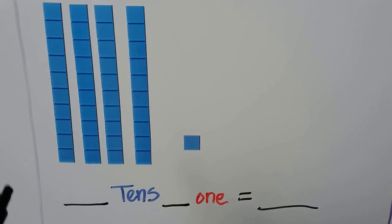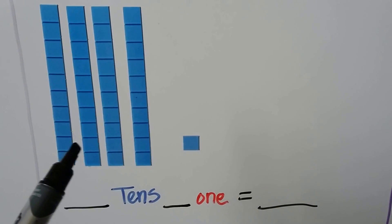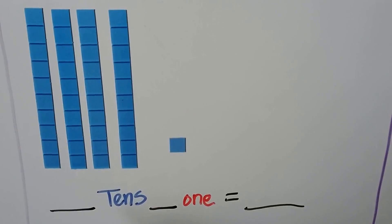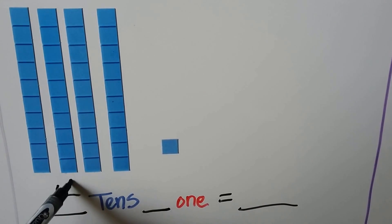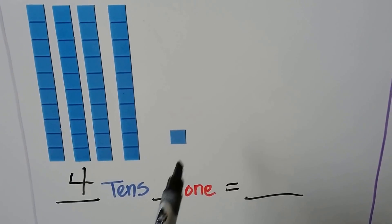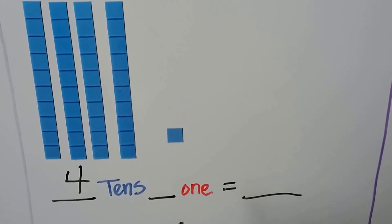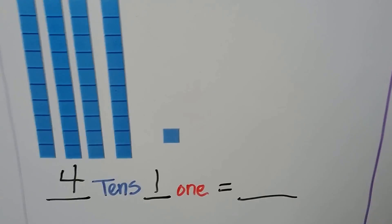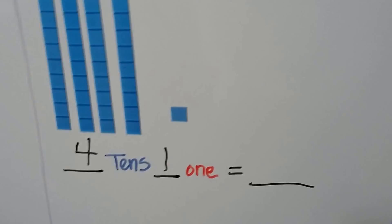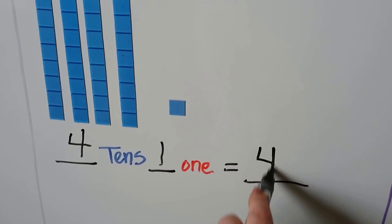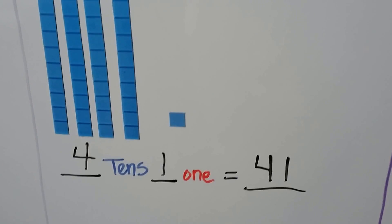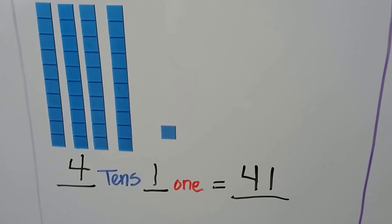How many tens are here? One, two, three, four tens. And we have just one. We can write the number. There's a four in the tens place and a one in the ones place. We have 41.